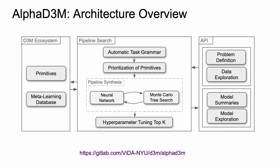AlphaD3M introduces new techniques to effectively navigate the large search space, and through its API it allows the user to explore the input data and the derived machine learning pipelines. The pipeline search is conducted by four modules: automatic construction of task-based grammars, prioritization of primitives, pipeline synthesis using Monte Carlo Tree Search and neural networks, and hyperparameter tuning.